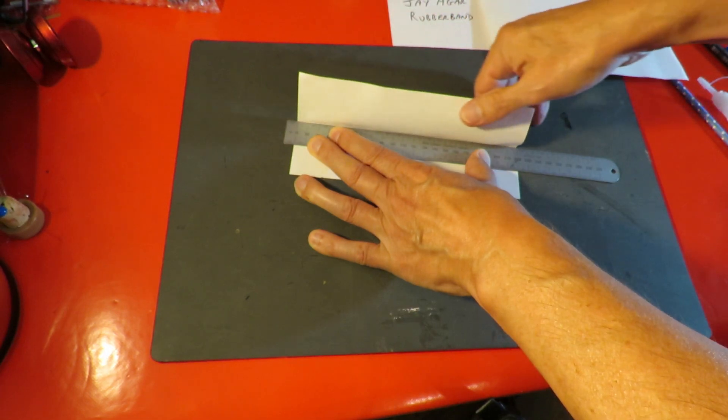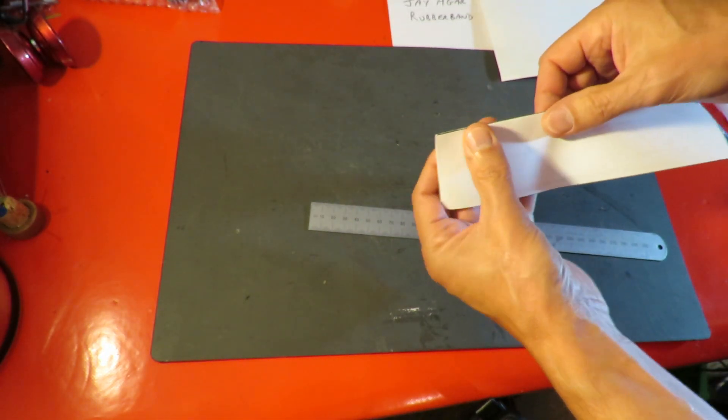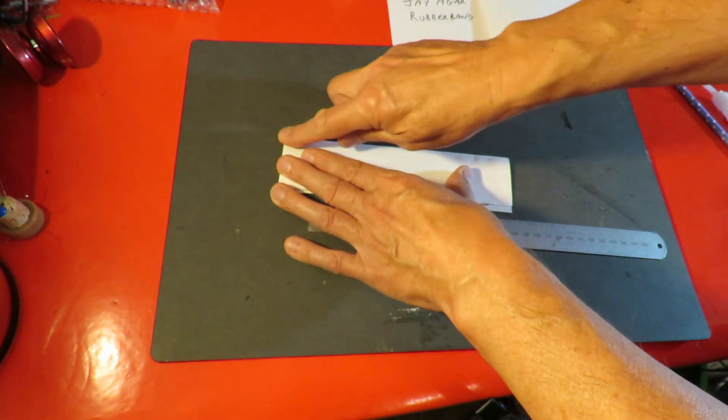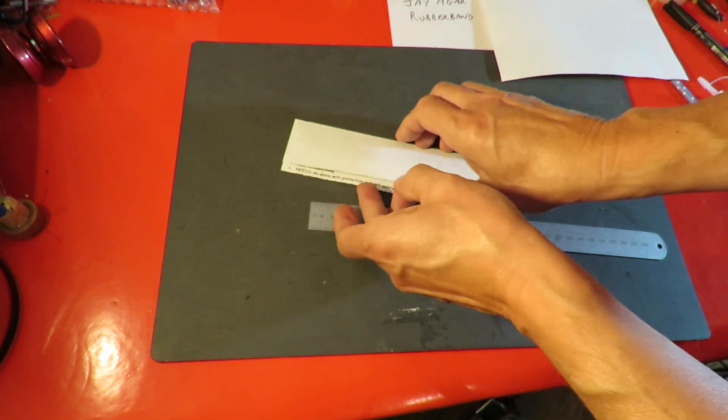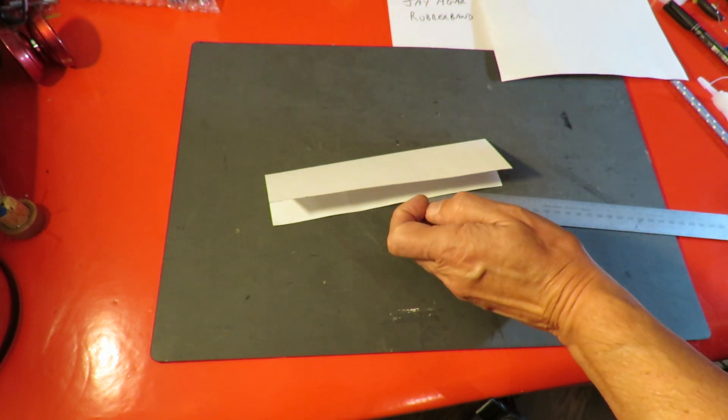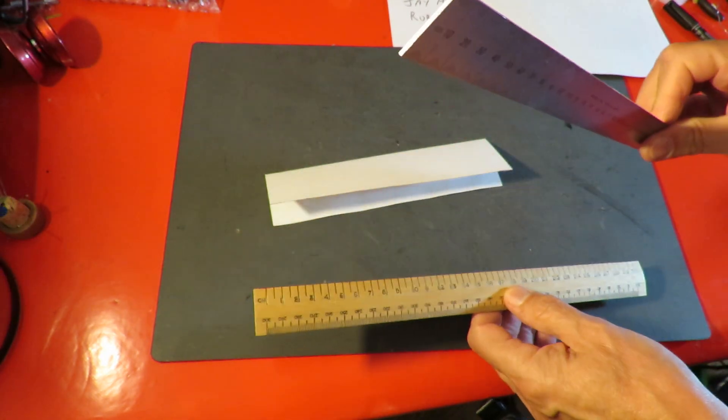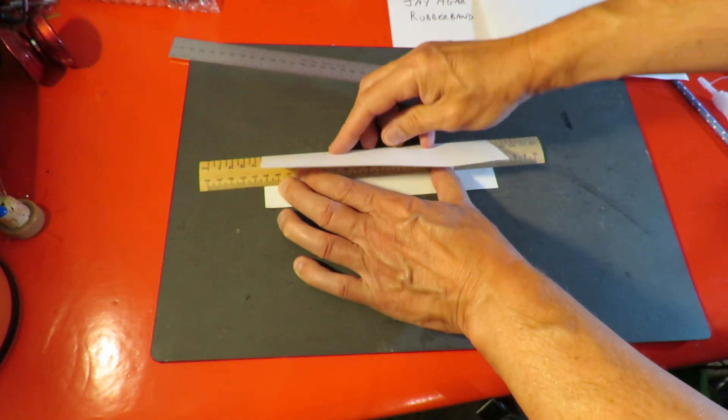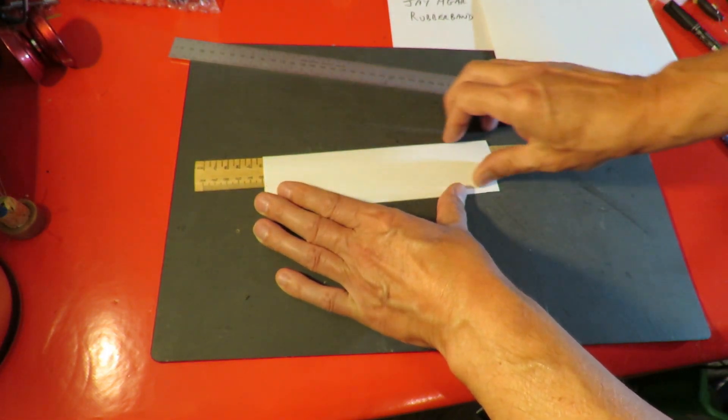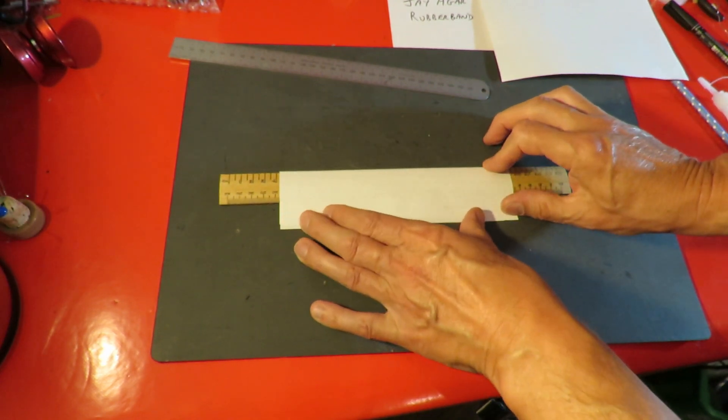Fold it along there. Fold it along there. Just use this wooden ruler because it's a bit thicker than the metal one, just to give us a bit of a lift at the front. We'll just glue them together along the back here, so we'll get a bit of an airfoil shape.